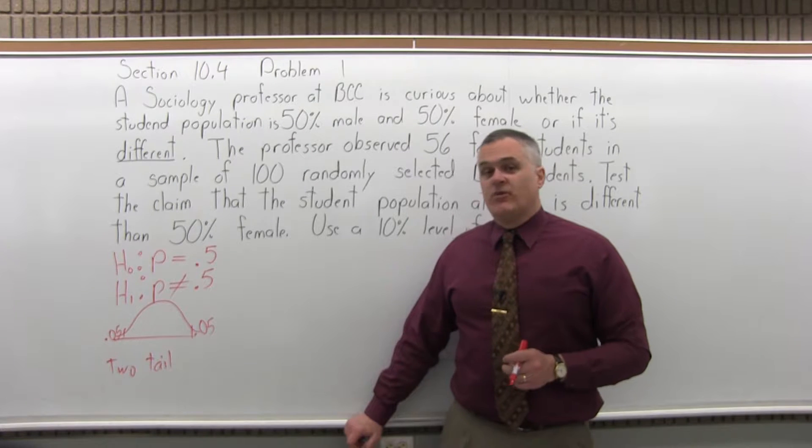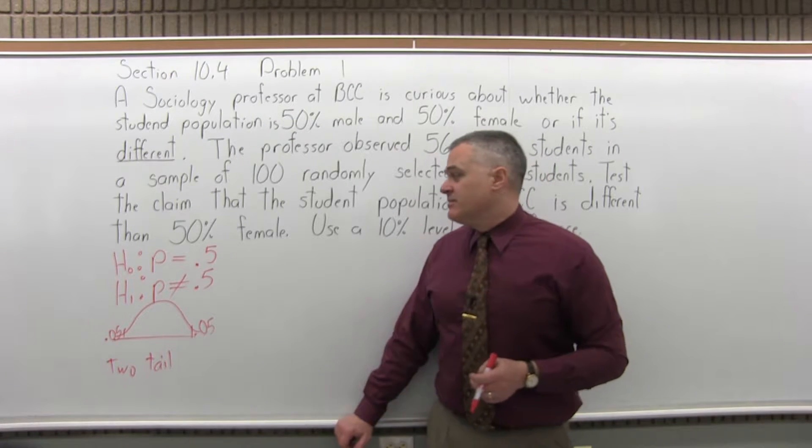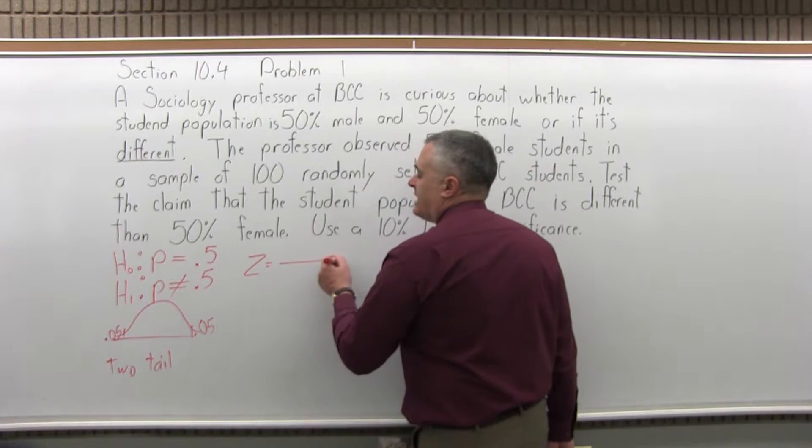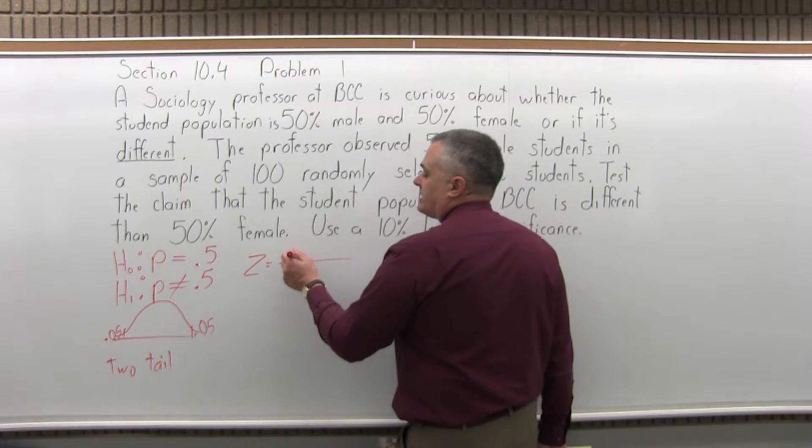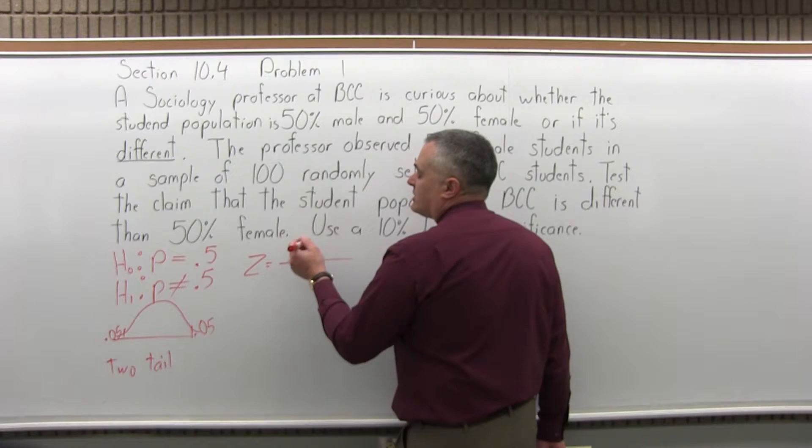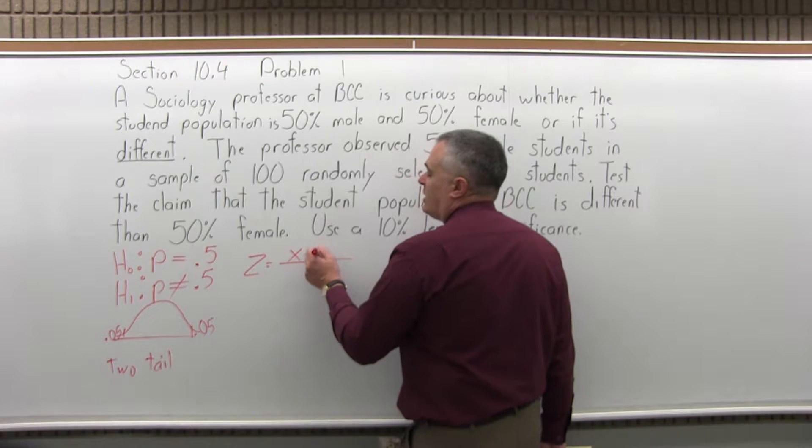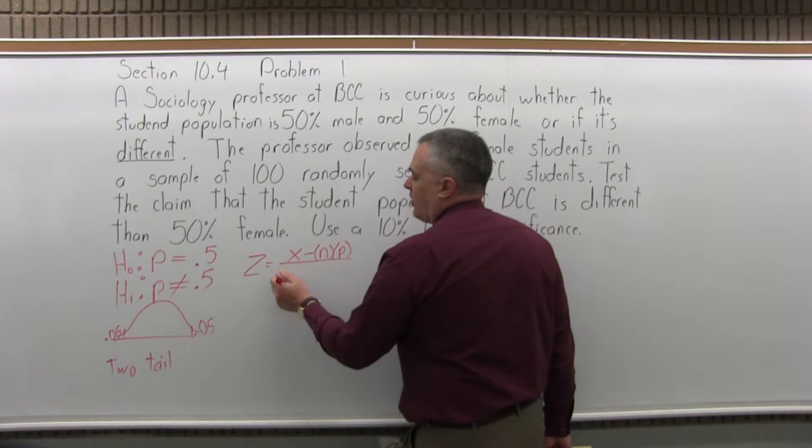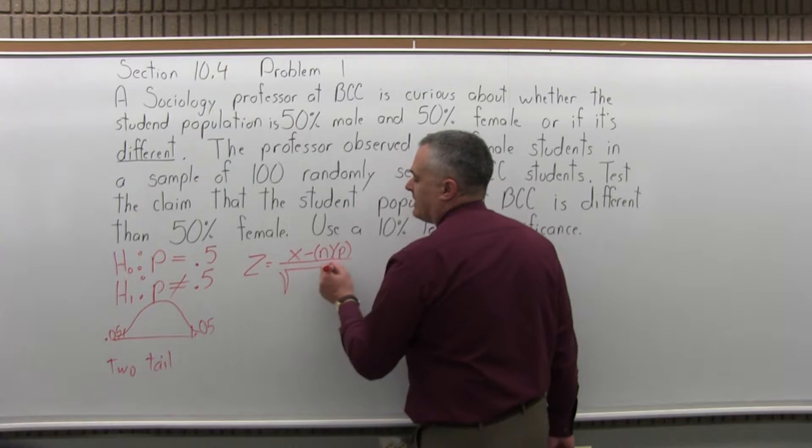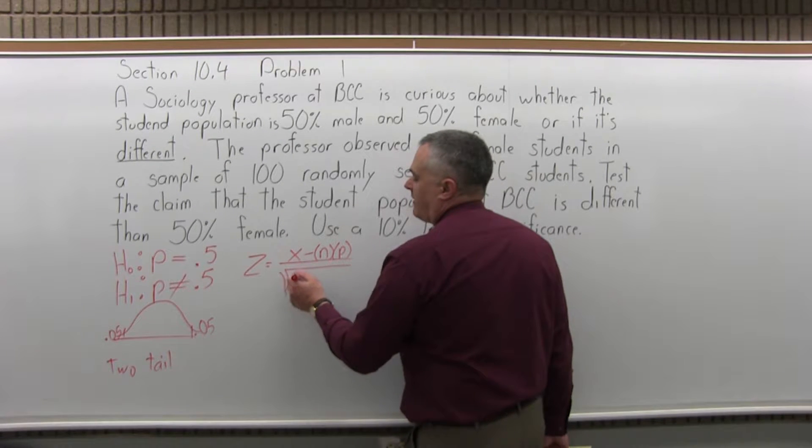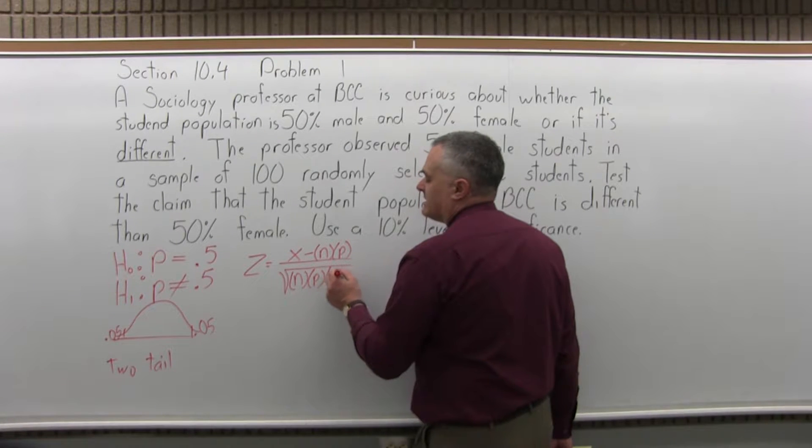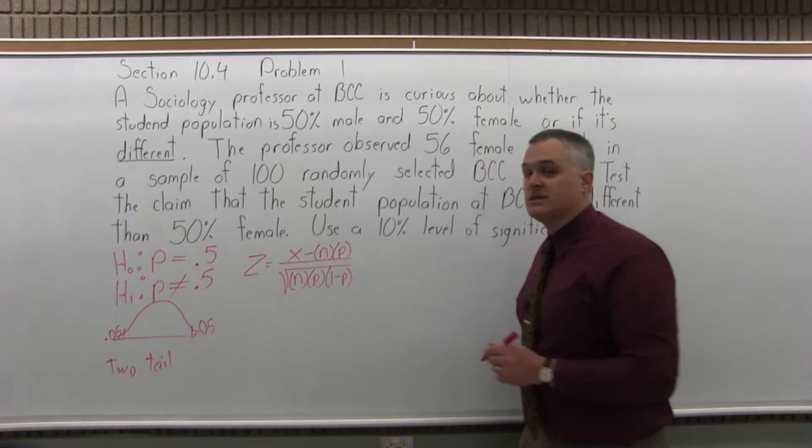The next step, step four, is calculate the value for z. For a test of proportion, it is x, the observed number of successes, minus n times p, where n is your sample size and p is your proportion that you're testing, over the square root of n times p times 1 minus p. That's what we're going to compute. That's our value for z.